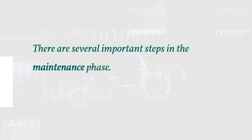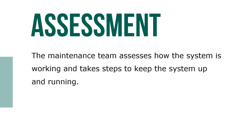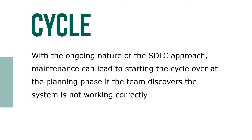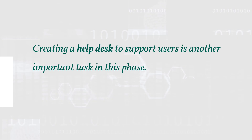There are several important steps in the maintenance phase. The maintenance team assesses how the system is working and takes steps to keep the system up and running. If the system's objectives are not being met, the team must take corrective action. With the ongoing nature of the SDLC approach, maintenance can lead to starting the cycle over at the planning phase if the team discovers the system is not working correctly. Creating a help desk to support users is another important task in the maintenance phase.